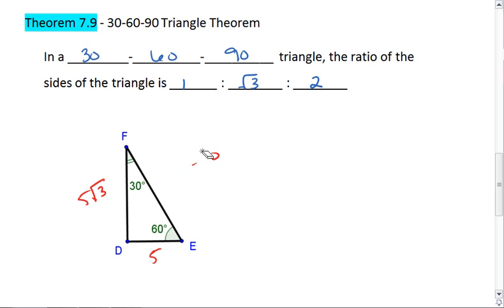Okay, let's try another one. What if I told you that this longer leg was 7 times the square root of 3? Then the shorter leg, we divide by the square root of 3, so we're left with 7. And to go to the hypotenuse, we take the shortest leg and double it, which gives us 14.